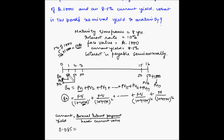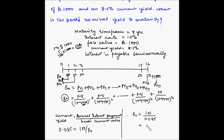The 50 rupee interest payment is for six months, but current yield considers the annual interest payment. So if in six months the interest is 50 rupees, in one full year the interest will be 100 rupees. So 0.085 equals 100 divided by B0. Therefore B0 equals 100 divided by 0.085, which equals rupees 1176.47. So the present value of the bond is rupees 1176.47.